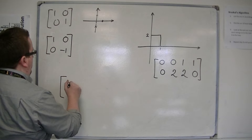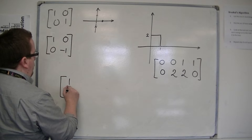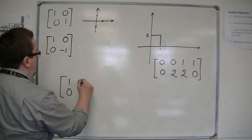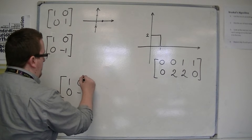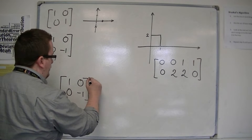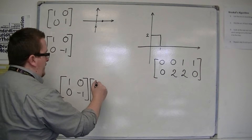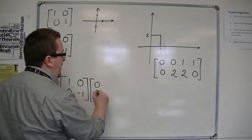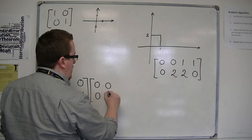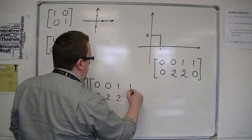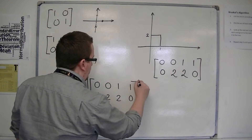So if I apply this matrix to this matrix, I should find that the rectangle is reflected in the x-axis. Let's see what happens: the matrix 1, 0, 0, -1 applied to the coordinate matrix 0,0 / 0,2 / 1,2 / 1,0.